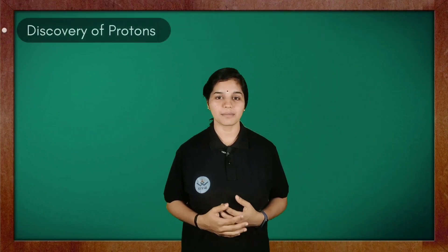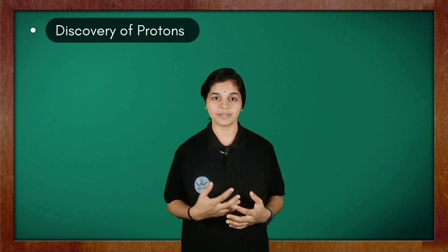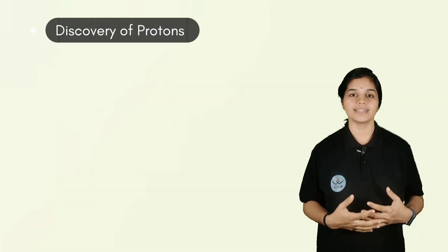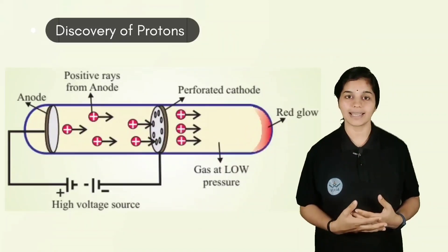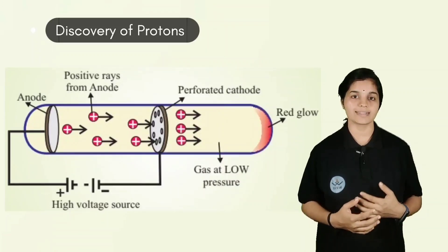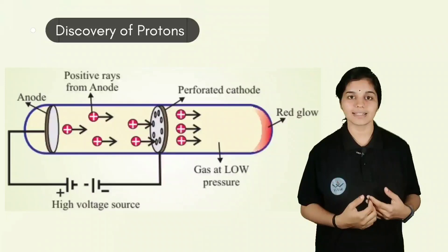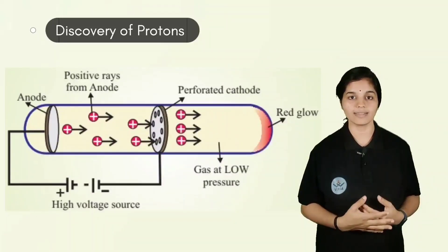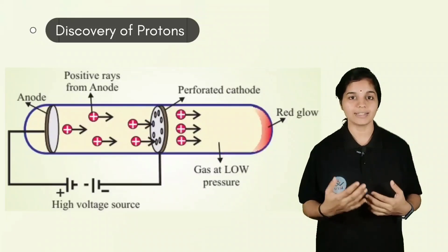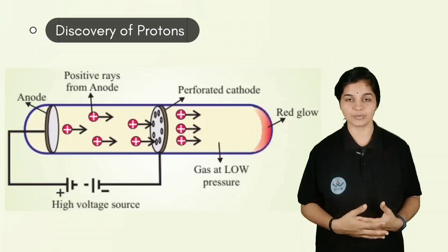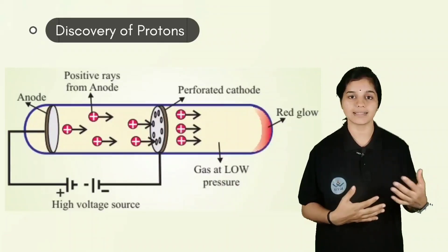The discovery of the subatomic particle proton was done by Goldstein, who used a modified cathode ray tube experiment. During the experiment, it was observed that rays traveled from anode to the cathode, and these rays were termed canal rays. As these rays deviated towards the negative side of electric and magnetic field, it was considered that they consist of positively charged particles called protons. Unlike cathode rays, canal rays were dependent on the gas filled in the glass tube, and the charge to mass ratio was found to vary with the gases used.